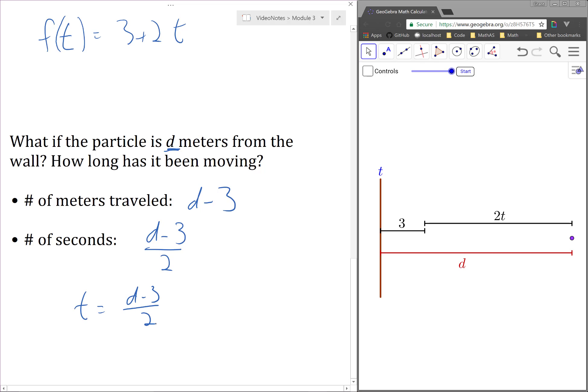So we see that t is a function of d, but we're still talking about the same relationship represented by the function f, but the input and output variables are reversed.